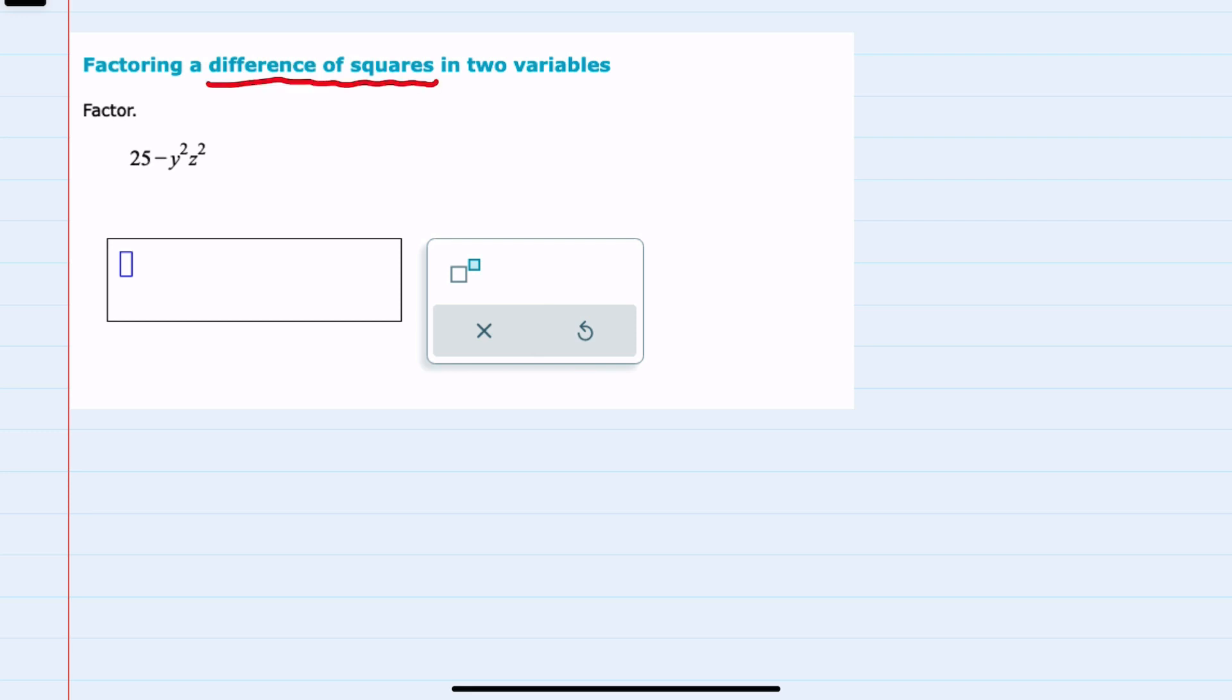I'll start by recalling that when we have a difference of two squares, like a squared minus b squared, those factor into the first one without the square minus the second, and then the first one without the square plus the second. So a squared minus b squared equals a minus b times a plus b.